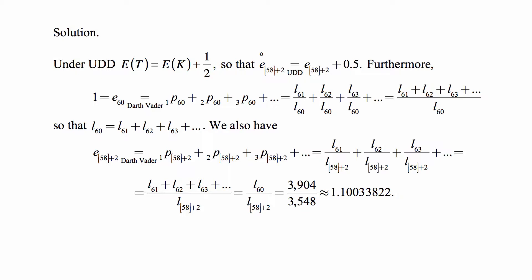So the quantity that we're looking for, the complete life expectancy for life selected at age 58 and then two years later we're doing the life expectancy calculation, under UDD that's equal to the curtailed life expectancy for the same life plus one-half.